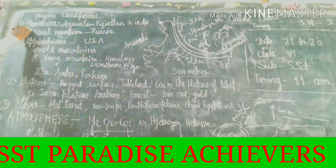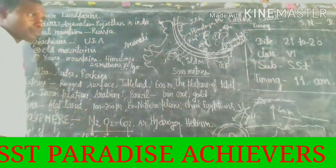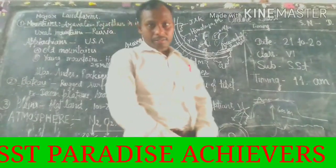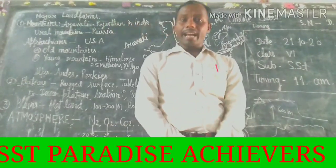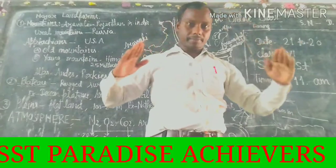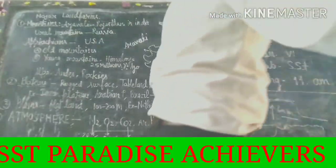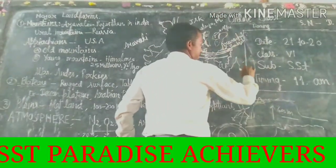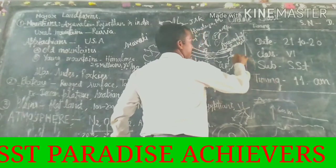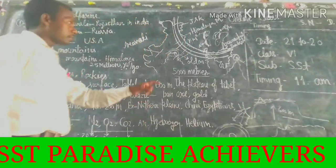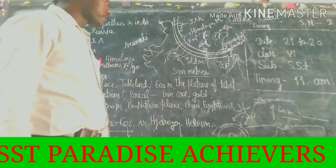Our first topic is Mountain. What are mountains? Mountains are an uplifted area of the earth. They have sharp peaks. If you see this figure, this is what sharp peaks look like. Mountains have sharp peaks.